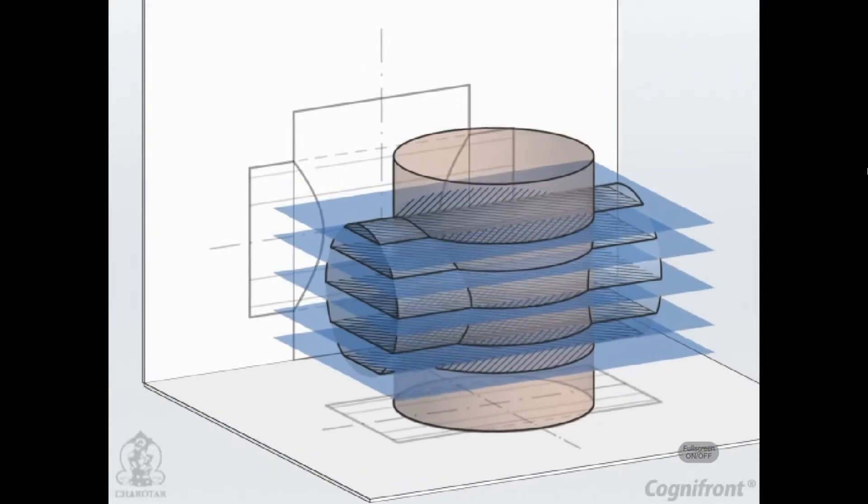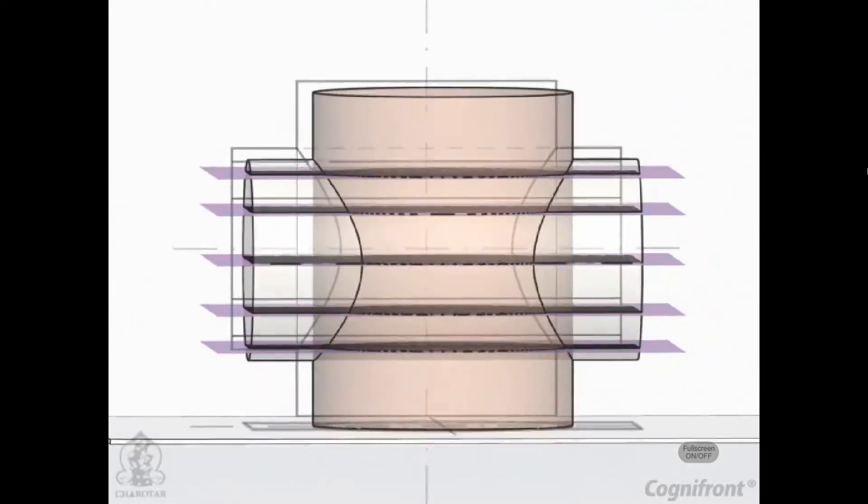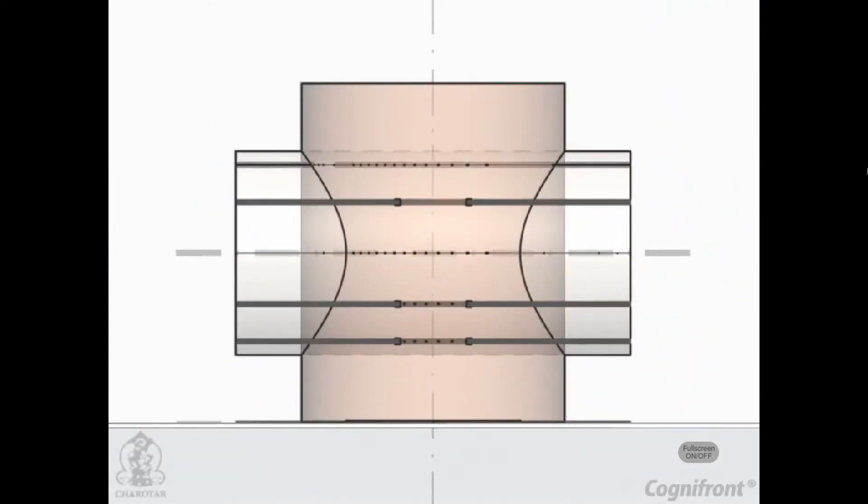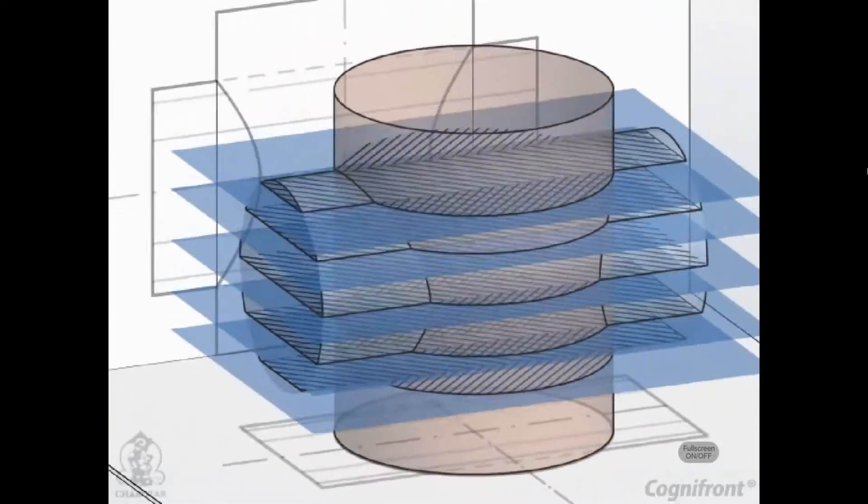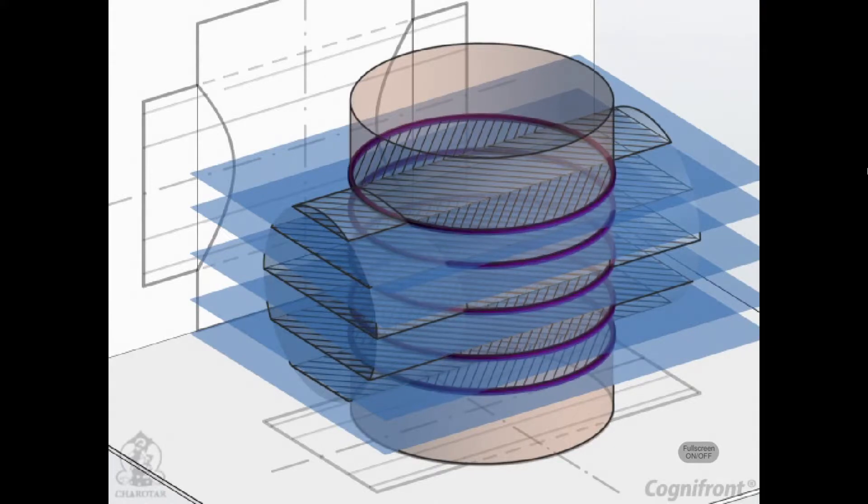Assume a series of horizontal cutting planes passing through the lines on the horizontal cylinder and cutting both the cylinders. Sections of the horizontal cylinder will be rectangles while those of the vertical cylinder will always be circles of the same diameter as its own.